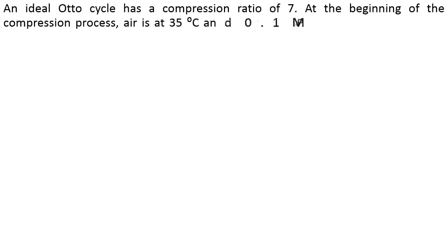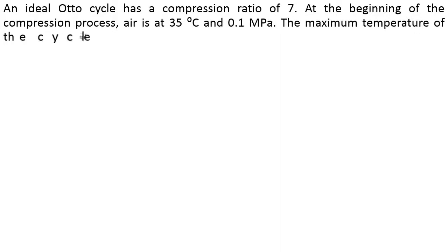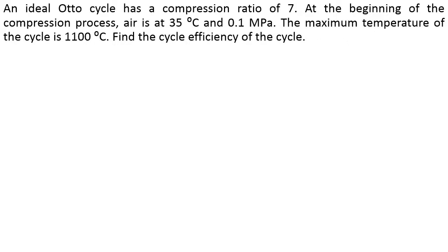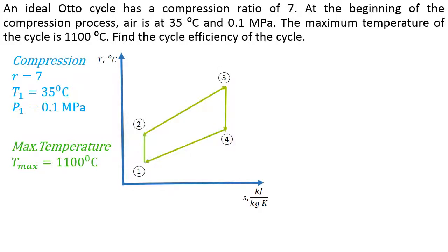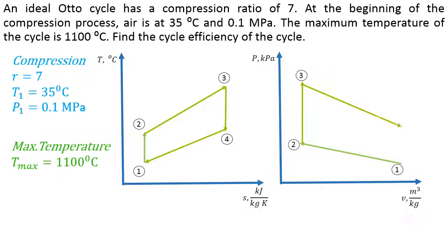Now let's work a problem. An ideal Otto cycle has a compression ratio of 7. At the beginning of the compression process, air is at 35 Celsius and 0.1 MPa. The maximum temperature of the cycle is 1100 Celsius. Find the cycle efficiency. The given information is: for compression, the temperature is 35 Celsius and the pressure is 0.1 MPa; the compression ratio is 7; and the maximum temperature is 1100 Celsius. This information is enough to draw the temperature-entropy diagram and the pressure-specific volume diagram.